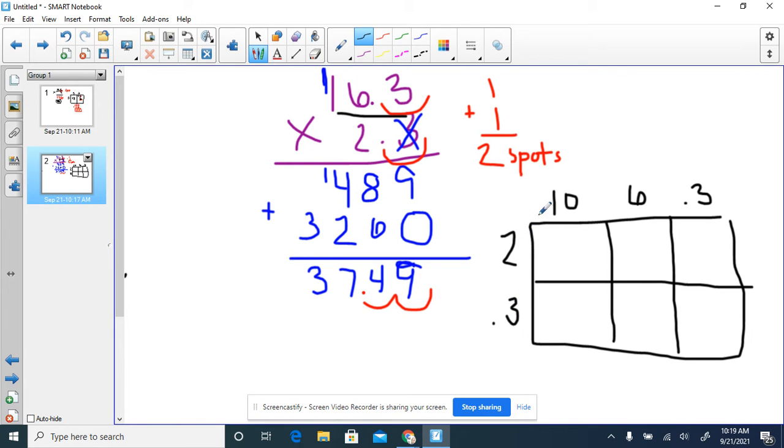In our first box, we're multiplying 2 times 10 gives us 20. Our second box, we're multiplying 6 times 2 gives us 12. Our third box, we're multiplying 2 times 0.3. You're going to pretend that decimal point does not exist for this part of the problem, which gives us 6. Now we're going to add in our decimal point. If it is one spot in our question, then it's one spot in our answer.